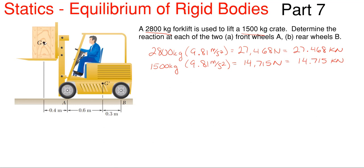What we have here at G is the crate weight, which is the 1500, so that'll be the 14.715 kilonewtons right here. And then we have the forklift weight, which is going to be the 27.468 kilonewtons. Hopefully you can read that. So what we're going to do with part A...